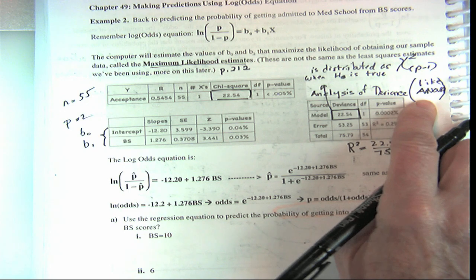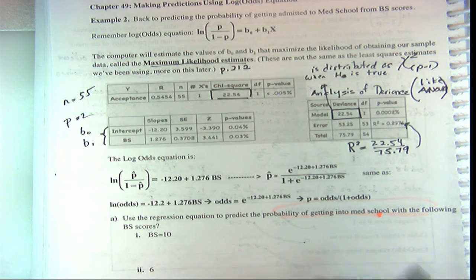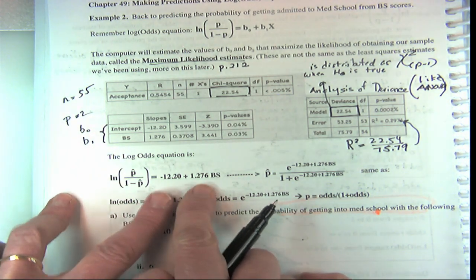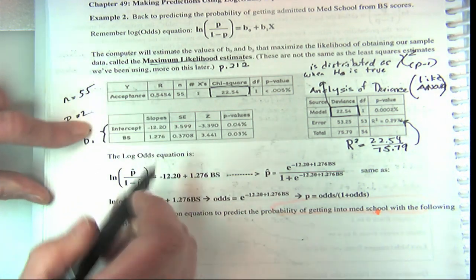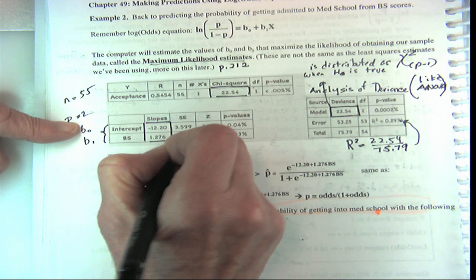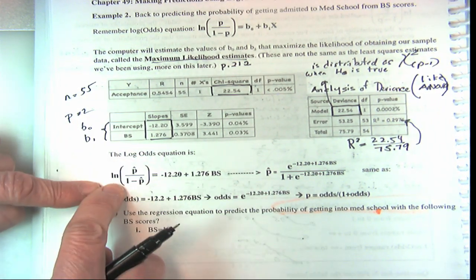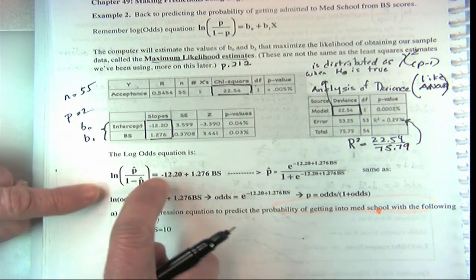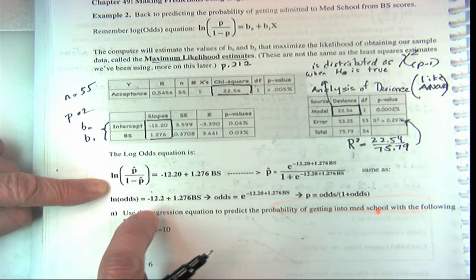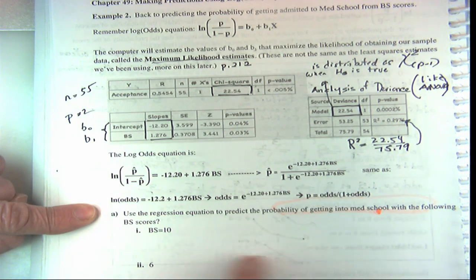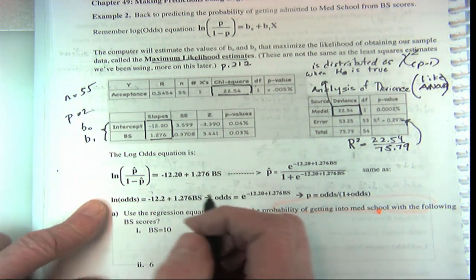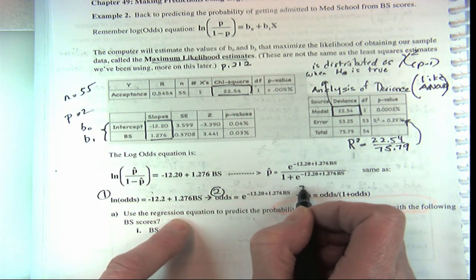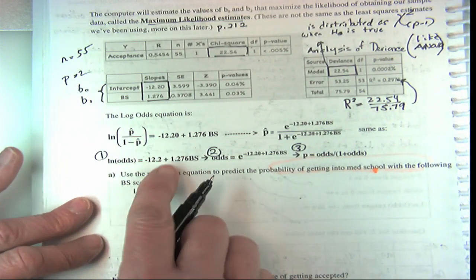Let's do predictions using this log-odds equation. The computer returned this log-odds equation, which we can write as a line with beta naught and beta 1 — but it's for the log odds, p-hat over 1 minus p-hat. We're going to go from that to get the probability using three steps: step one, plug the biological science score into the log-odds equation; step two, exponentiate to get the odds; step three, convert odds to probability.